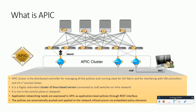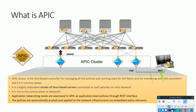The APIC is not a part of the control plane or even the data path of the complete fabric. If all the APIC controllers go down, the networking part of the fabric would still be working fine — your end hosts and end devices would be able to connect to the network over the fabric. The application networking needs are expressed in APIC over the REST interface. Whatever policies that we configure are coming over the REST interface, and those policies are automatically pushed and applied to the infrastructure via embedded policy elements which are part of the APIC software configuration.